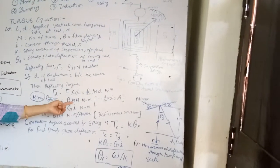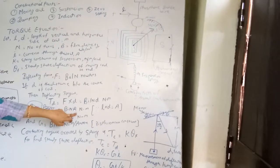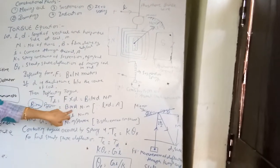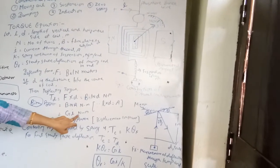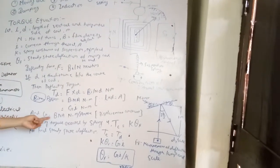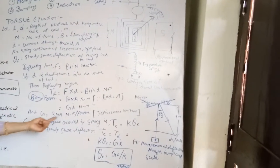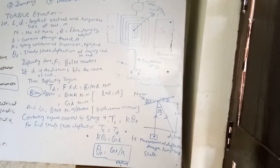B, N, and A are constant values — that is, fixed B, N, and A — so they can be denoted as G, and I is your supplied current. This G is called the displacement constant of the deflecting torque of the D'Arsonval galvanometer, and G is known as BINA, whose unit is Newton meter per ampere.